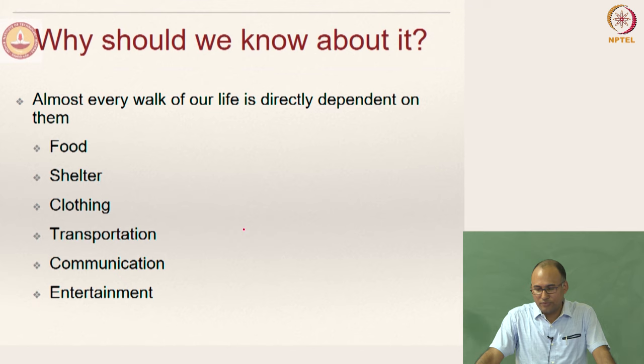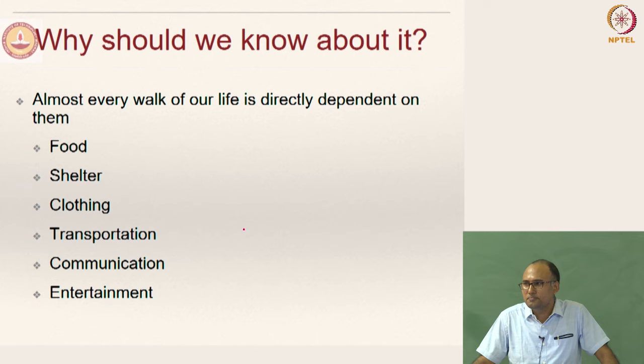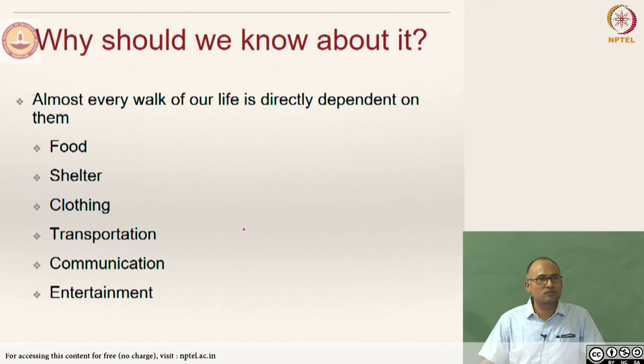Almost every part of our life is directly dependent on materials. No matter whatever aspect of life you take, it is dependent on materials. For instance, food — you cannot eat raw material, you need to cook. In order to prepare food, you need some processing. And to cook, you need a pot, and that pot should be made of a material. Depending on your financial situation or liking, you decide which kind of pot to buy.